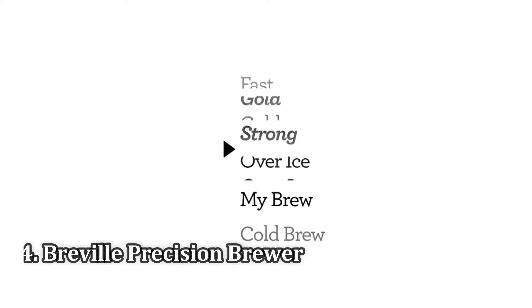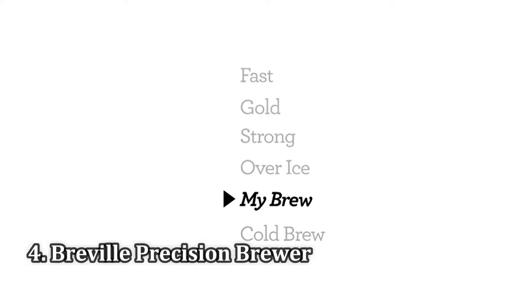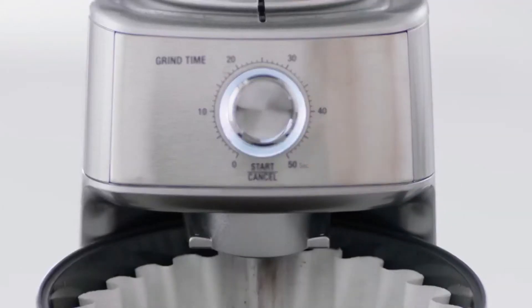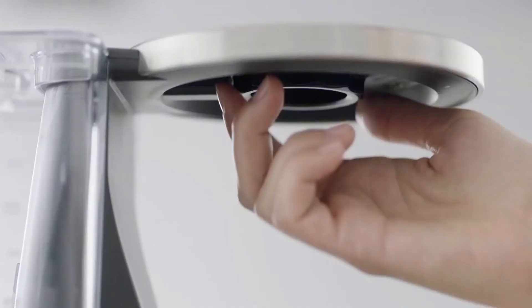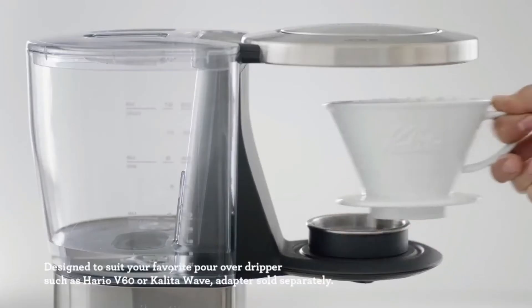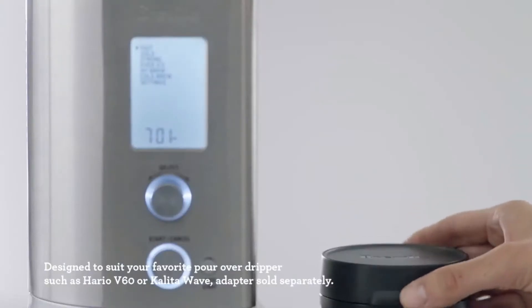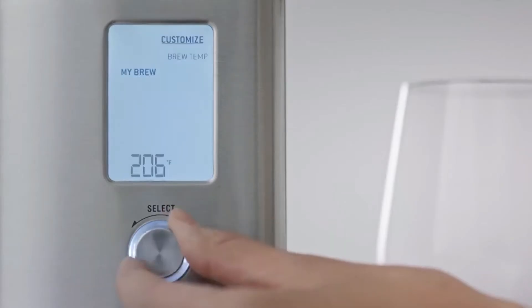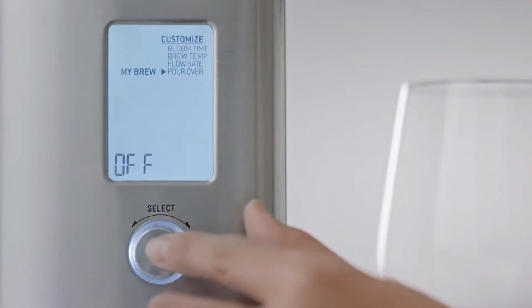Number 4. Breville Precision Brewer. The Breville Precision Brewer isn't your everyday coffee maker. It's a powerful machine capable of brewing your perfect cup of coffee, if you're willing to put the work in and have a tinker with all its impressive controls.